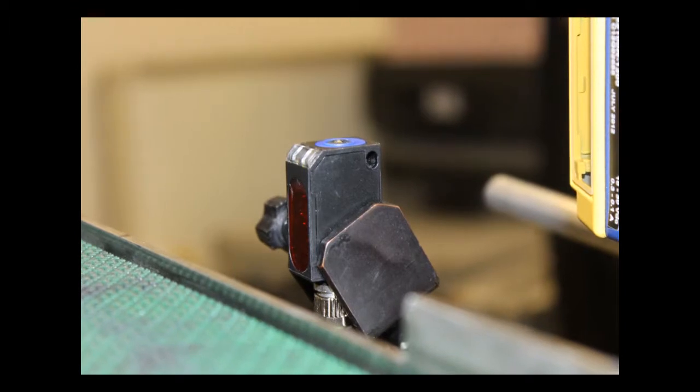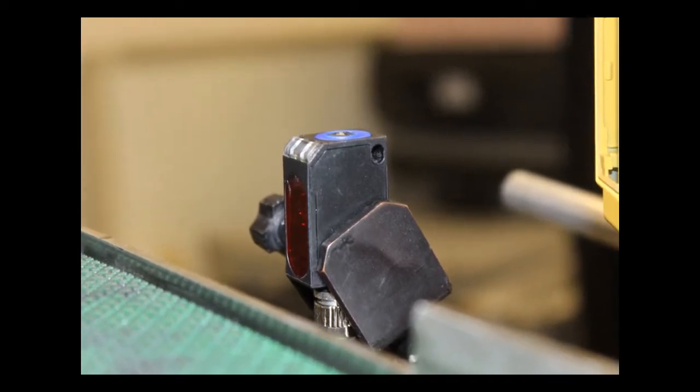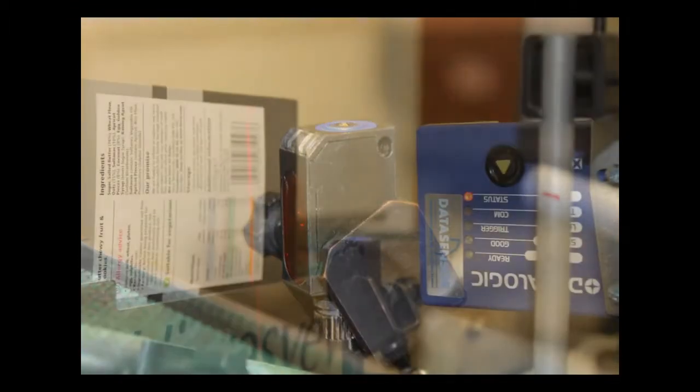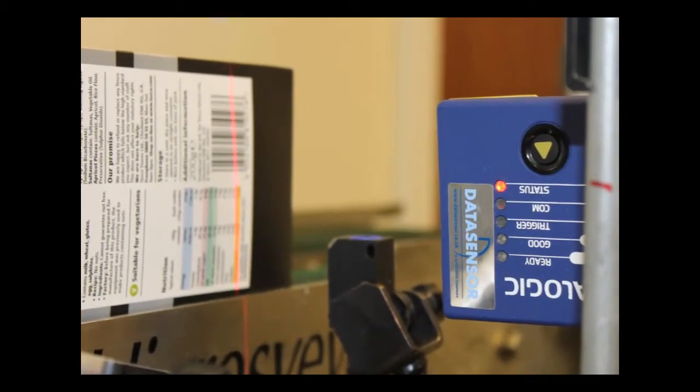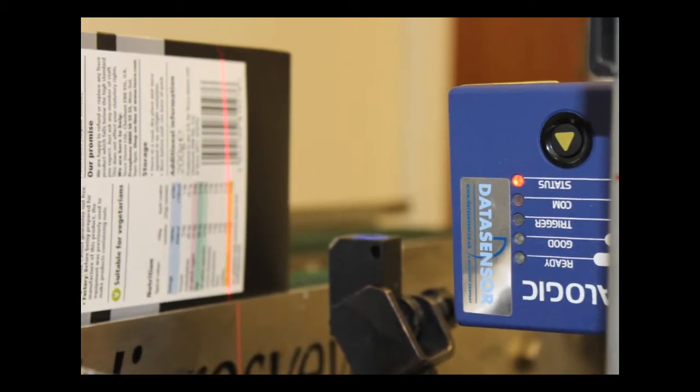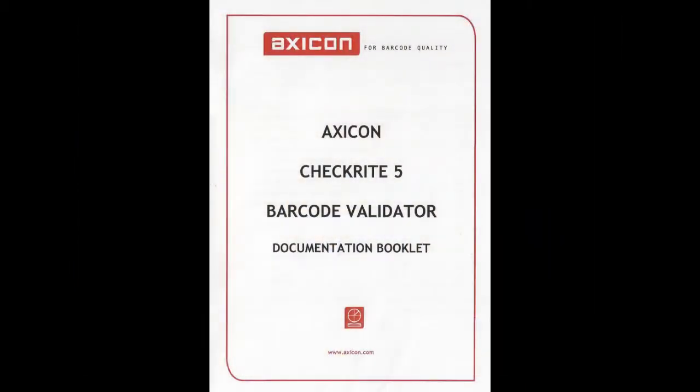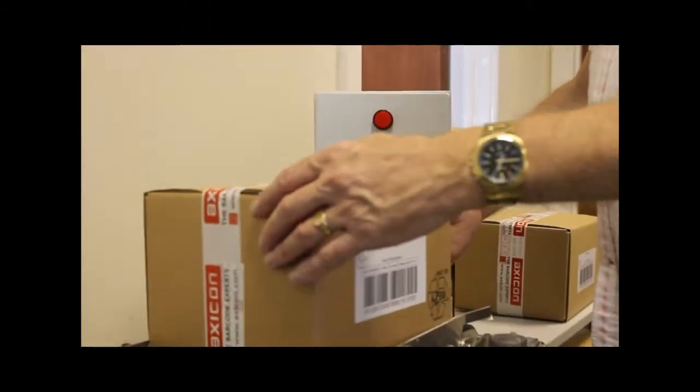On a conveyor belt the broken beam sensor is placed ahead of the scanner. When the beam is broken the scanner is triggered to scan a barcode prior to being triggered again. The scanner is placed at the optimum distance as shown in the setup guide and can be placed at any orientation depending on the orientation of the barcode.